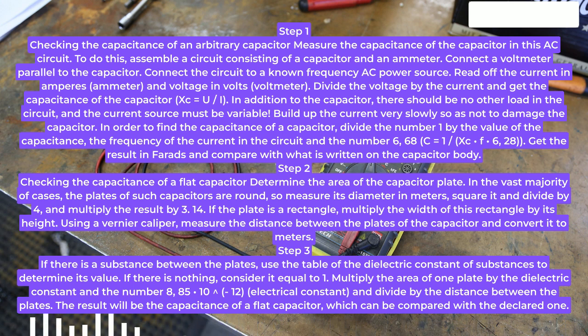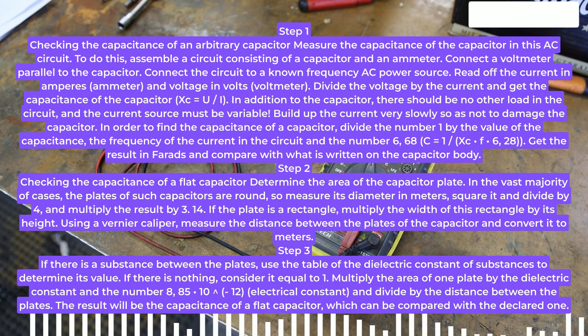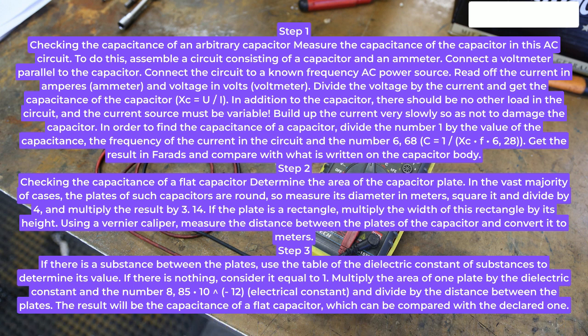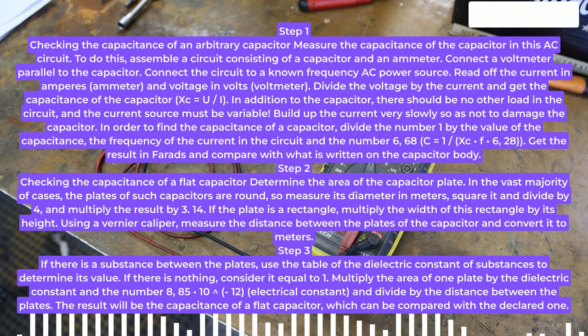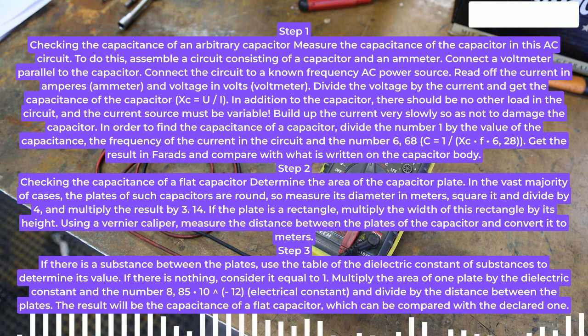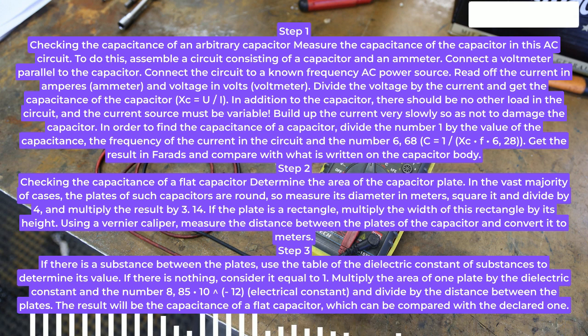Step 2. Checking the capacitance of a flat capacitor, determine the area of the capacitor plate. In the vast majority of cases, the plates of such capacitors are round, so measure its diameter in meters, square it and divide by 4, and multiply the result by 3.14. If the plate is a rectangle, multiply the width of this rectangle by its height.